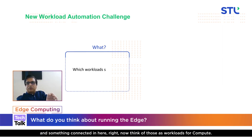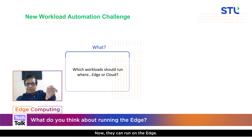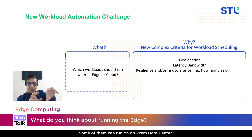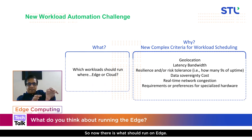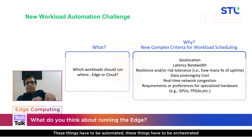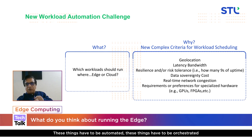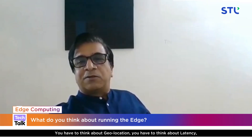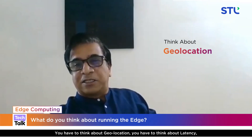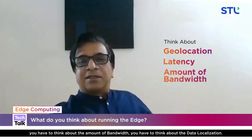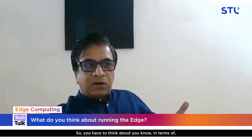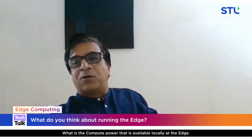Think of those as workloads for compute. They can run on the edge, some of them can run on multiple different clouds, some of them can run on on-prem data centers. So what should run on edge? These things have to be automated and orchestrated because the sheer scale and time required means you cannot do it manually. You have to think about geolocation, latency, the amount of bandwidth, data localization, and the compute power available locally at the edge.